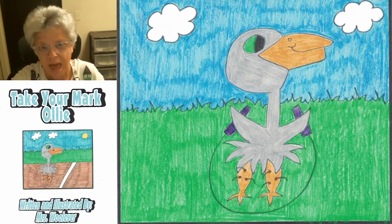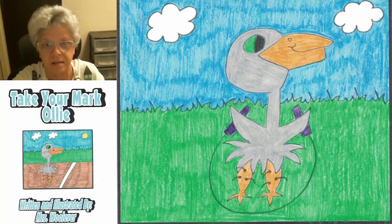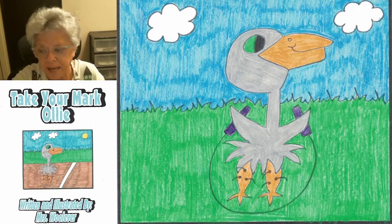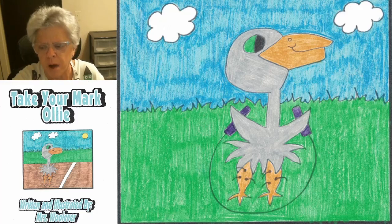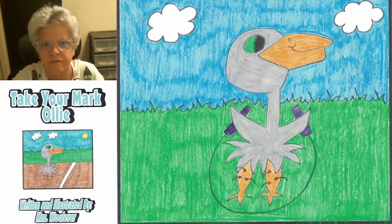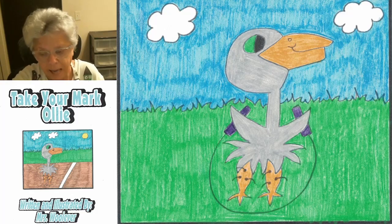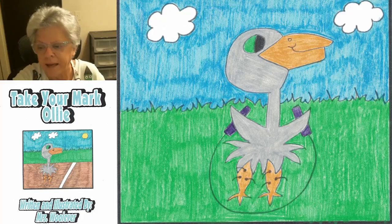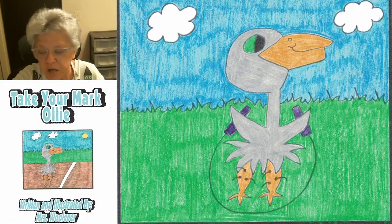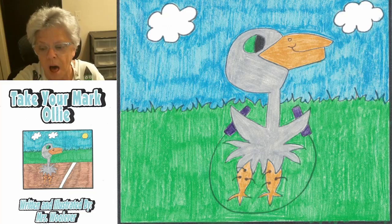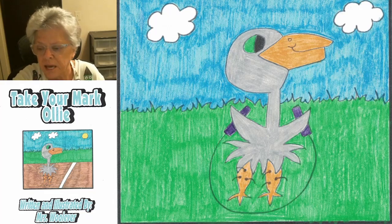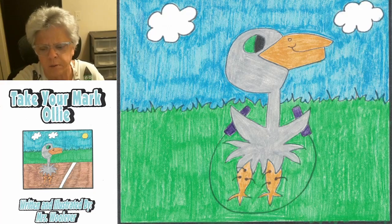Ollie's class was planning a big track meet at the end of the week. A track meet is an event where people run races and do other fun games outside. Ollie couldn't wait to run against his friends. He got in shape by jogging around the block and jumping rope. He didn't want to get tired out when he ran against them.